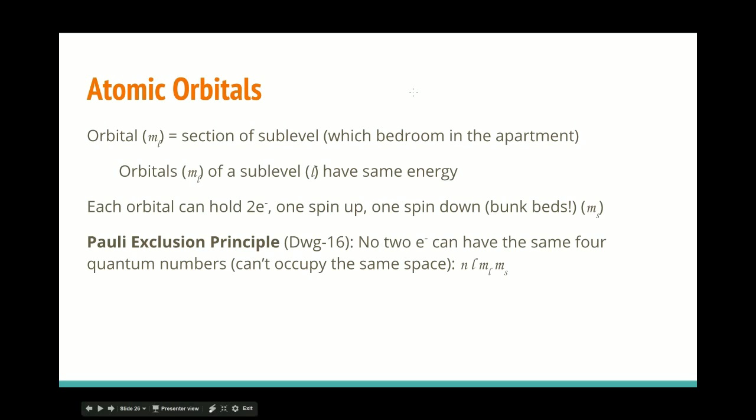So, the Pauli exclusion principle, yet another dead white guy, is that no two electrons can have the same four quantum numbers. Electrons don't share beds. They can share bunk beds, but not beds.